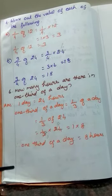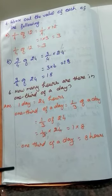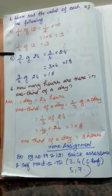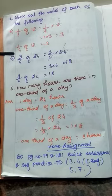I hope you all understand. This is the method of writing fractions from given statement sums. Today's home assignment: do page number 119 and 121, quick assessment sums in your book itself. And self-practice 7C, third and fourth sum, and fifth and seventh as well. Thank you children, thank you all.